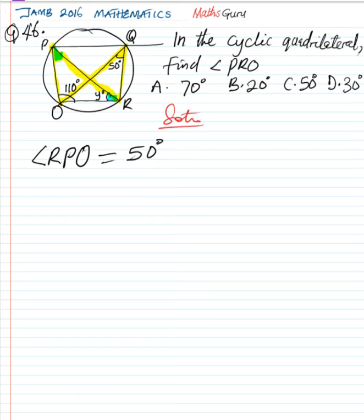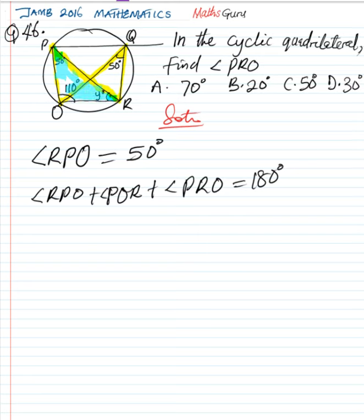If that is certain, that is here, it's going to be equal to 50 degrees. We'll have it that angle RPO plus angle POR plus angle PRO is going to be equal to 180 degrees. That is the sum of interior angles of a triangle. Considering the triangle here.